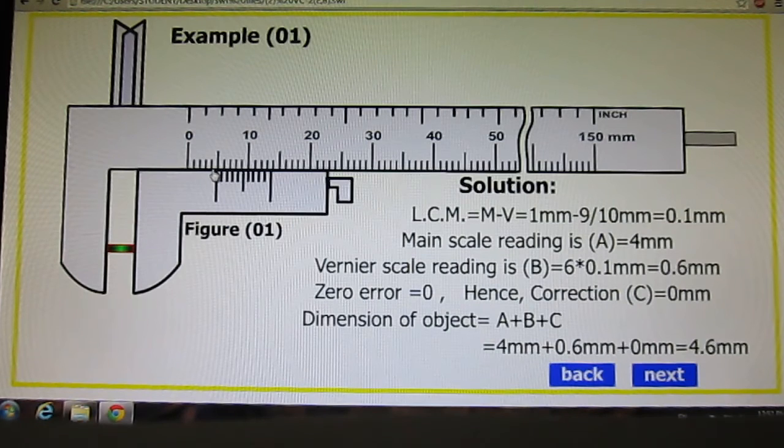Where it is? Yes it is 4mm. Vernier scale reading B is 6 into 0.1mm. Six is the aligned mark, and its value is 0.6mm.